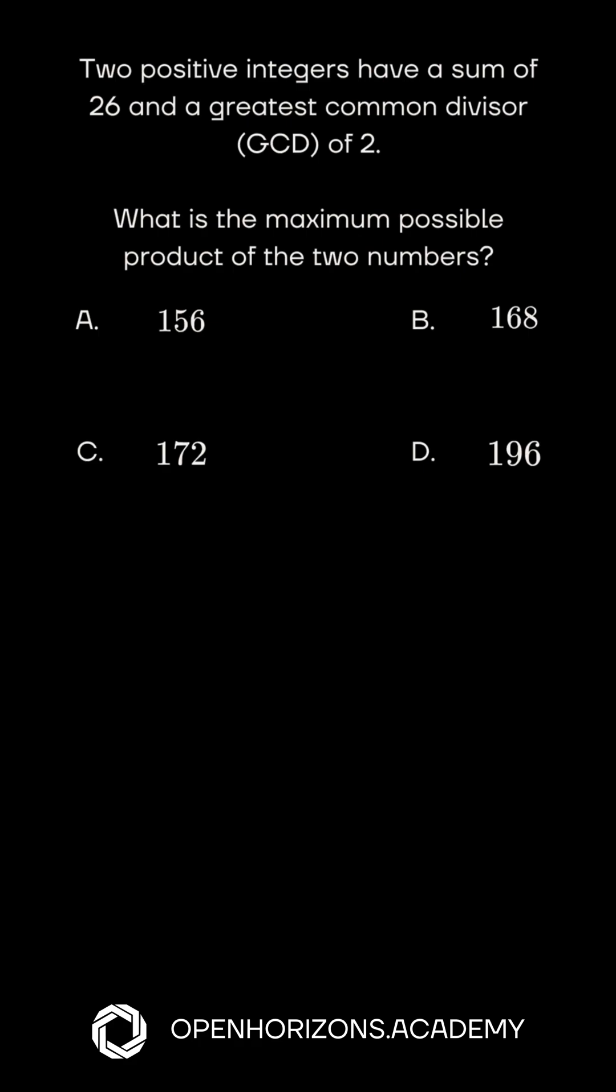Dumps even strong math students. Two numbers add to 26 and their GCD is 2. What's the maximum possible product?